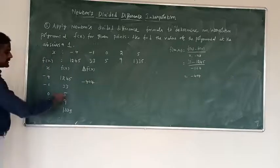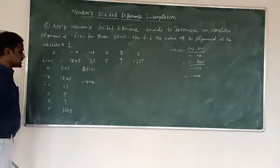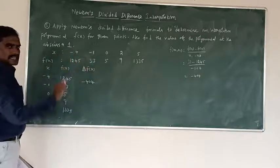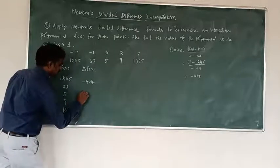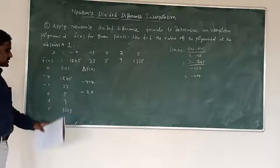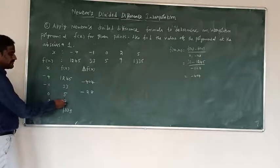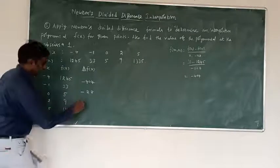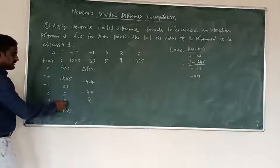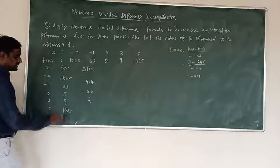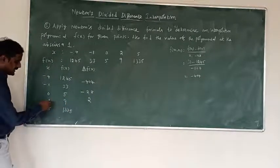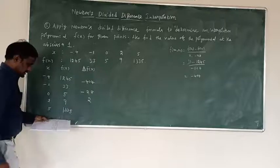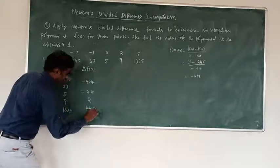Similarly, the difference between 5 and 33 divided by 0 minus minus 1 gives minus 28. Next, the difference between 9 and 5 divided by 2 minus 0 gives result 2. Then the difference between 1335 and 9 divided by 5 minus 2 gives result 442.